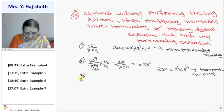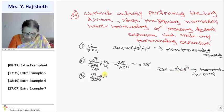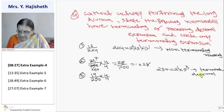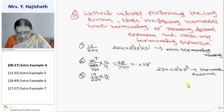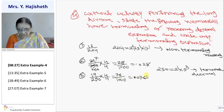Now third sum. It is 19 by 250. 250 again can be written as 2 raised to 1 into 5 raised to 3. So again we have to multiply it with 4. Then it is terminating, this decimal is also terminating. Because 250 into 4 by 4. So it is 76 by 1000. So it is 0.076.